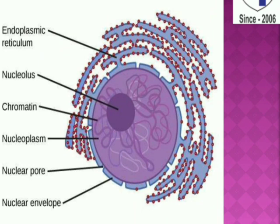Between the two nuclear membranes, spaces are present called nuclear pores. The nuclear envelope is perforated by apertures called nuclear pores. Nucleoplasm is a transparent, semi-solid, granular, and slightly acidophilic ground substance of the nucleus.